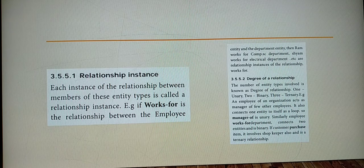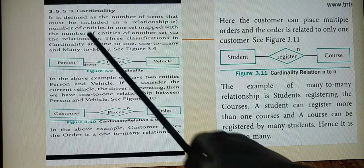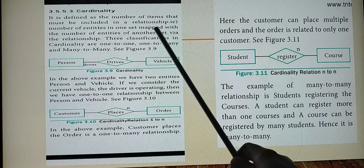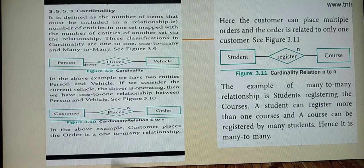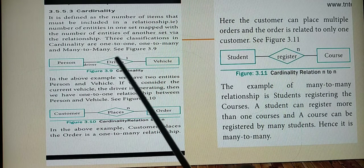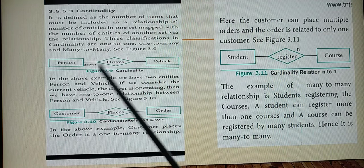Cardinality is defined as the number of items that must be included in a relationship. It defines how many entities participate in the relationship. There are three classifications: one-to-one, one-to-many, and many-to-many.